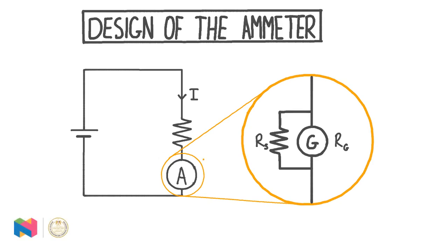In this video, we're going to be talking about the design of the ammeter, which is a device we use to measure current in a circuit. We'll see how we can make an ammeter using a galvanometer and a resistor known as a shunt resistor, and we'll see how to calculate the required resistance of the shunt resistor based on the properties of the galvanometer and the size of the current that we want to measure.